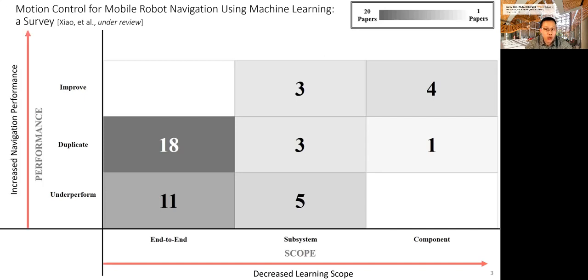So we compare the navigation performance of these learning methods to their classical counterparts. The x-axis is the scope of learning we saw in the last slide, in three categories: end-to-end learning, learning subsystems, and learning components. The scope decreases towards right. We further organize all these learning papers along a different dimension. The y-axis is the navigation performance compared to classical approaches, including underperform classical, duplicate classical, and improve classical, so better performance towards up. As you can see, there is a significant concentration of works at the lower left corner. These works are end-to-end learning and can at most duplicate what is already achievable by their classical counterparts. You can also see a rough correlation between decreased learning scope and increased performance.